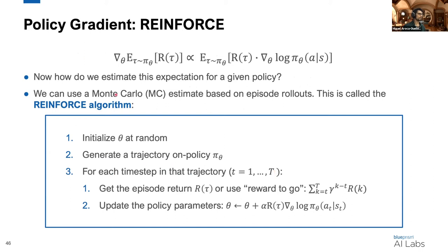So the REINFORCE algorithm allows us to estimate this expectation using Monte Carlo estimates from episode rollouts. We'll walk through this algorithm step by step. First, we initialize our parameters at random. For example, in the case of a neural network, this would be the weights and the biases. Then we generate a trajectory on-policy, using the current policy.